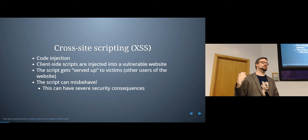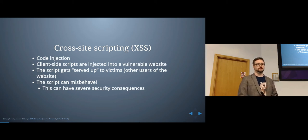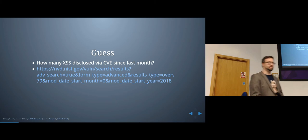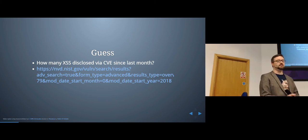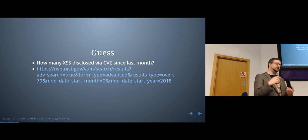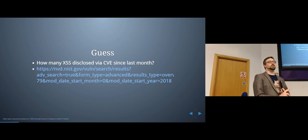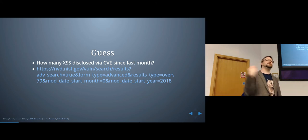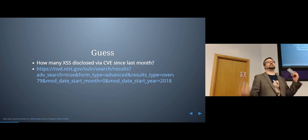Because it's so common, a lot of people don't actually realize the kinds of consequences that cross-site scripting can cause. How many cross-site scripting vulnerabilities do you think were publicly disclosed with a registered CVE since the beginning of January? Keep in mind it won't include live websites without a bug bounty program — most CVEs get registered against open source projects.